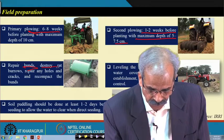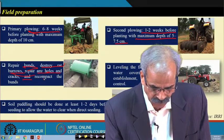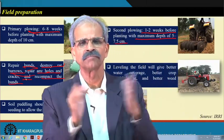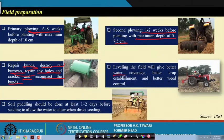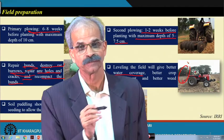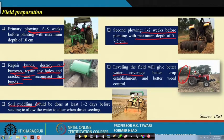The bunds and so forth — destroy rat burrows, repair holes and cracks, recompact the bunds — these are important for proper field preparation. Leveling the field will give better water coverage; I have already talked of the laser line leveler and this is very important. Soil puddling should be done at least 1 to 2 days before seedling, to allow the water to clear when direct seeding.